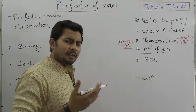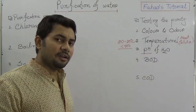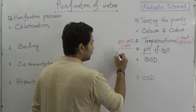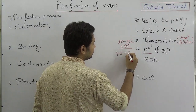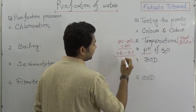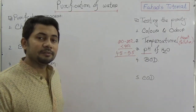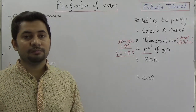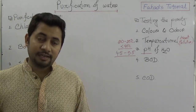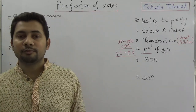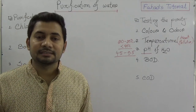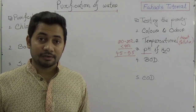In case of pH, the value should not be less than 4.5 or greater than 9.5. If the pH of water exceeds 9.5 or falls below 4.5, then we can say that this is polluted water.